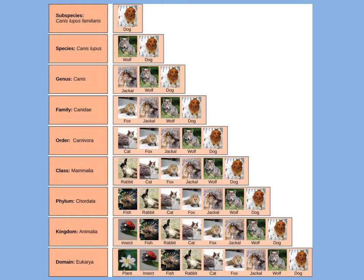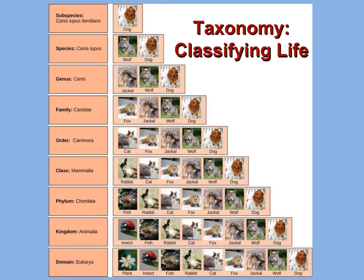Dogs are also animals, so are placed in the kingdom Animalia. They are in the phylum Chordata because their main nerve cord runs down their back. They are in the class Mammalia because females have mammary glands, and in the order Carnivora because they are carnivores. They are in the family Canidae, genus Canis — which contains wolves and coyotes. They are specifically Canis lupus because they are technically wolves, and a special subspecies: Canis lupus familiaris. The science of grouping organisms into taxa is called taxonomy.